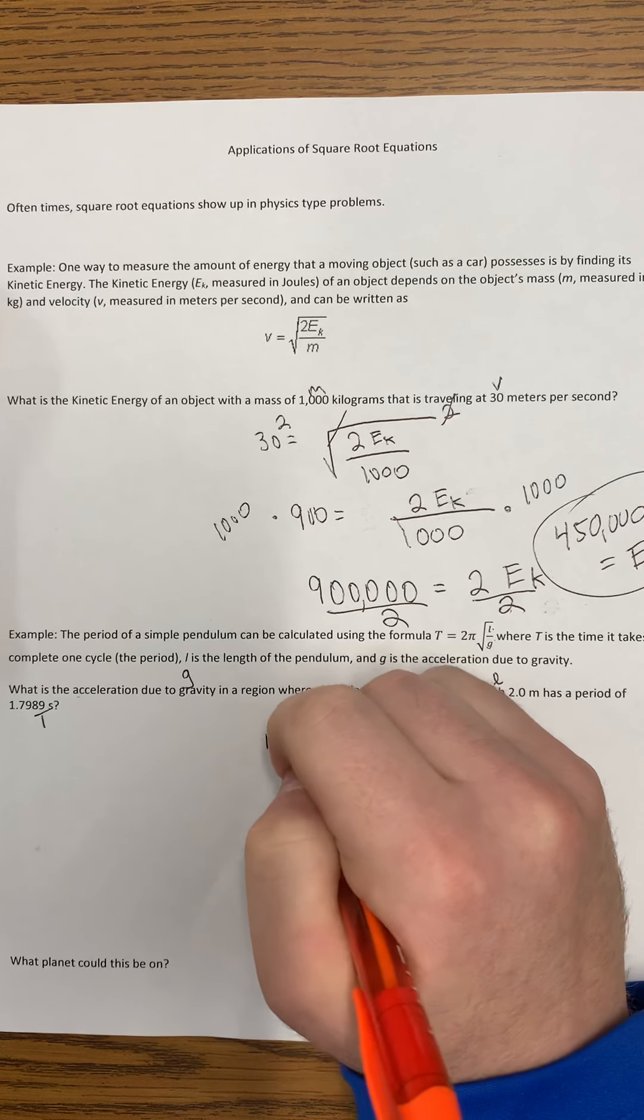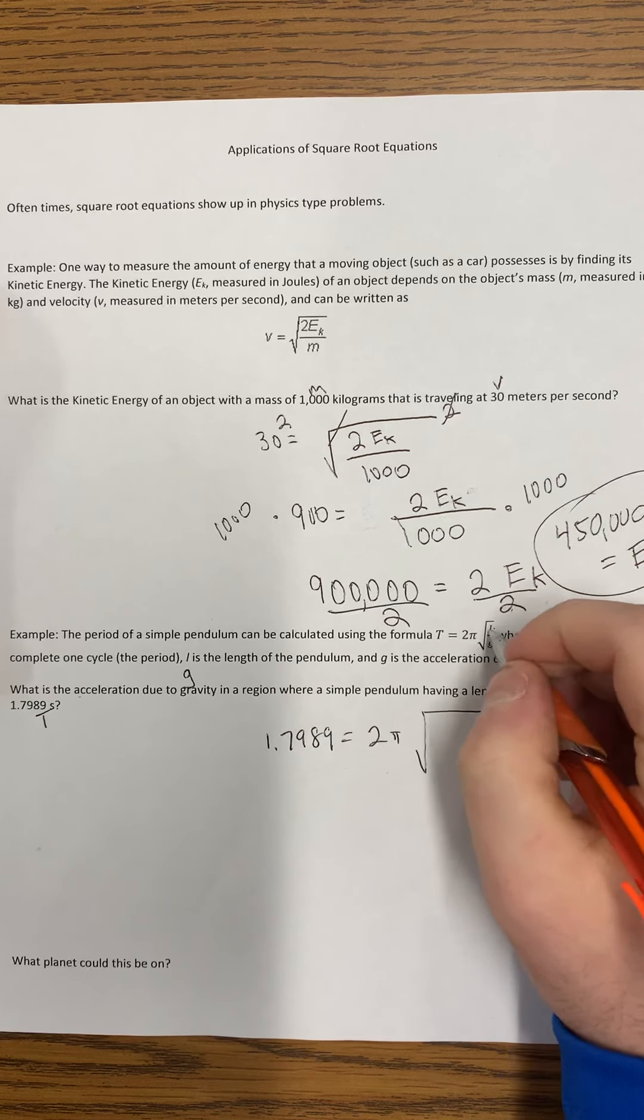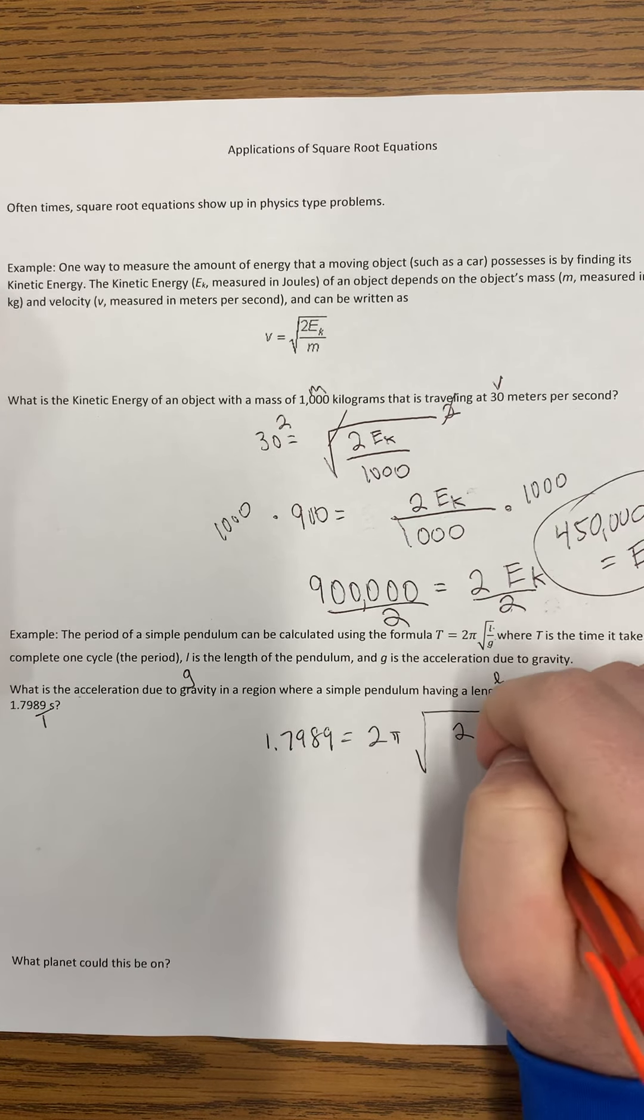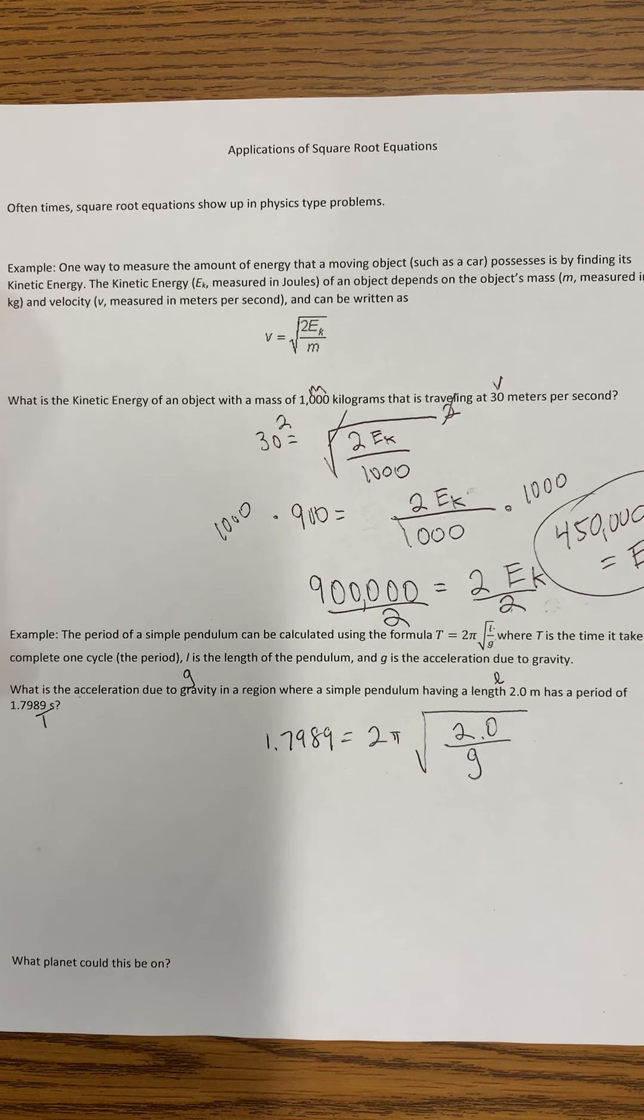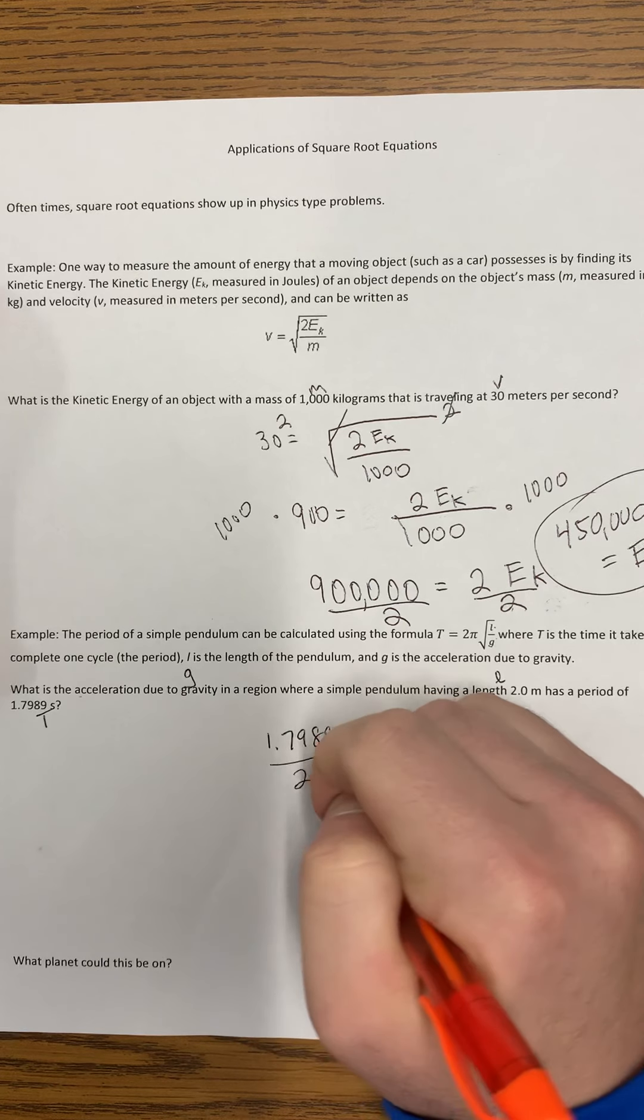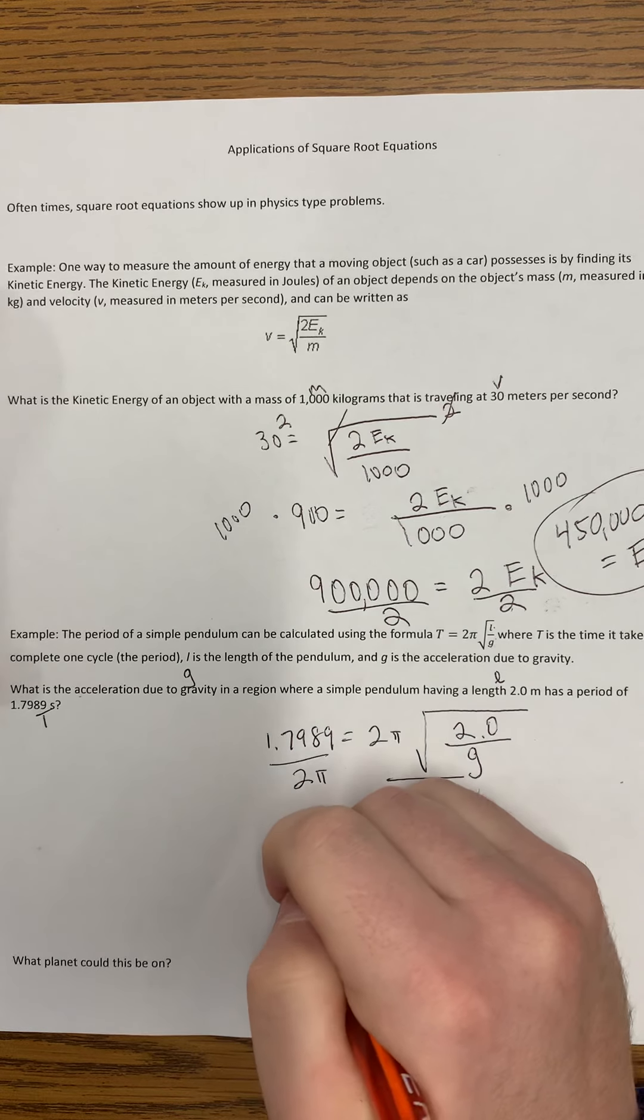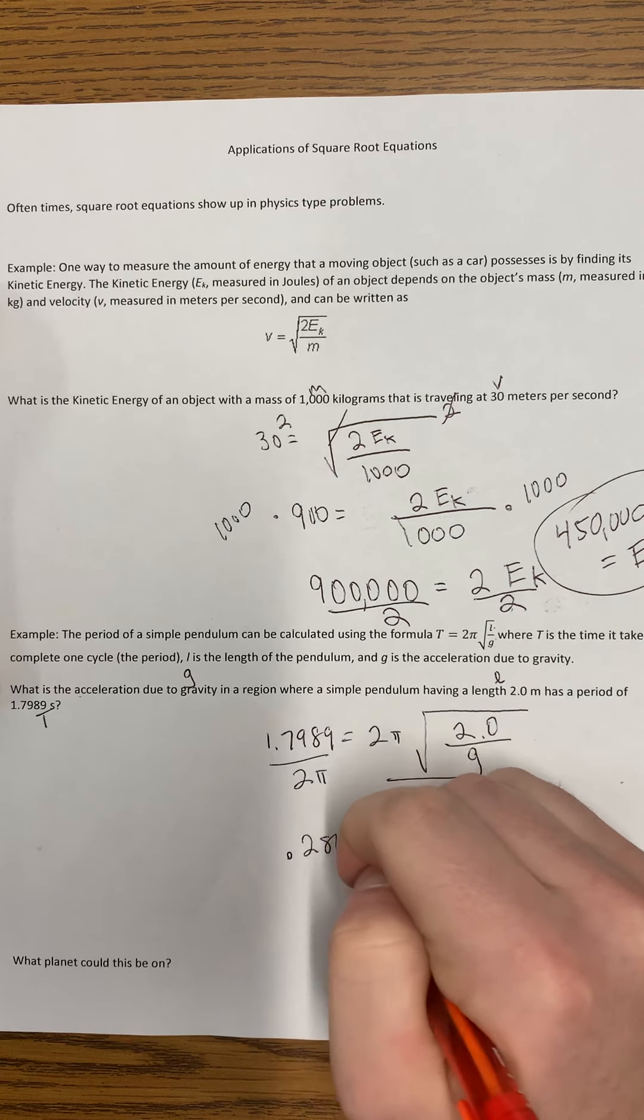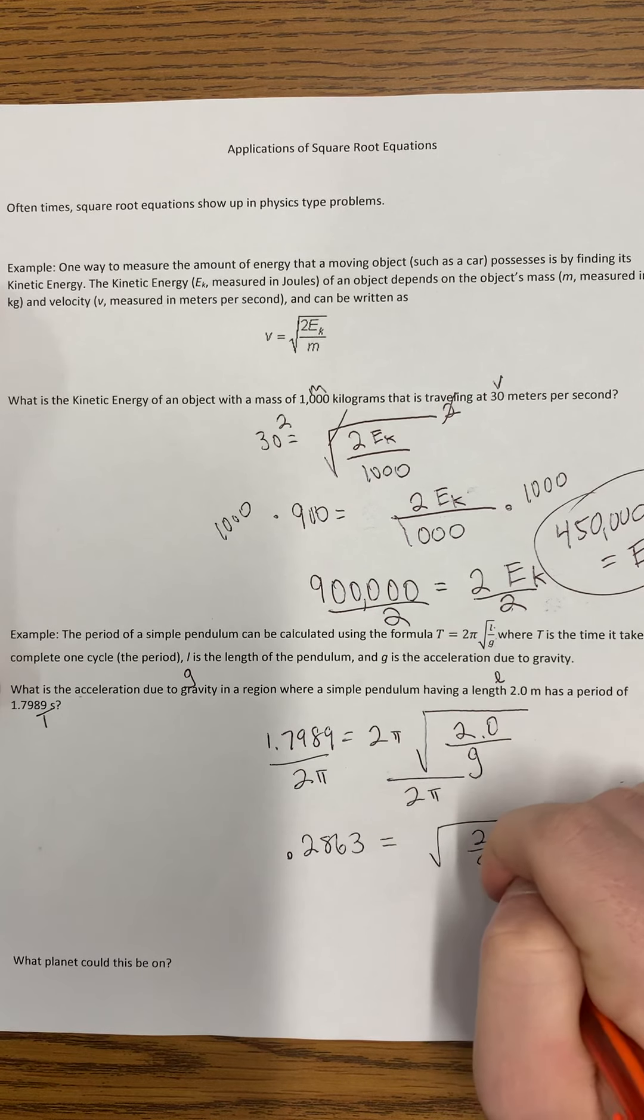So 1.7989 equals 2 pi times the square root of L, which is 2.0, divided by G, which we're trying to solve for. In order to solve this equation, we've got to get the radical by itself. So we divide both sides by 2 pi. Rounding to four decimal places, we get 0.2863 equals the square root of 2 over G.